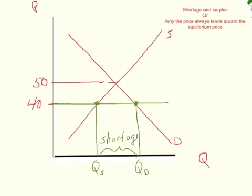So those shoes are just flying off the shelf. The store owner comes in the next day, sees the shelf is bare, orders some more shoes. The next shipment comes in, and still kind of unaware of what the market price really is, let's say they price the shoes at $60.